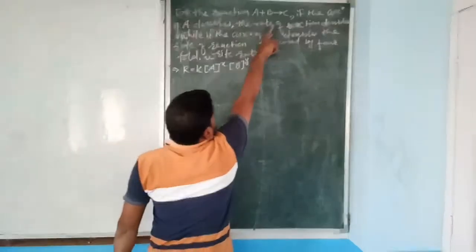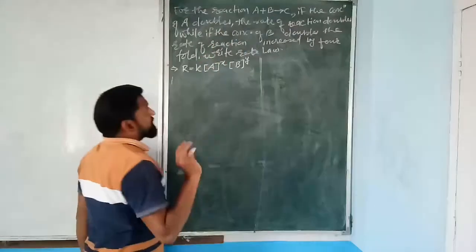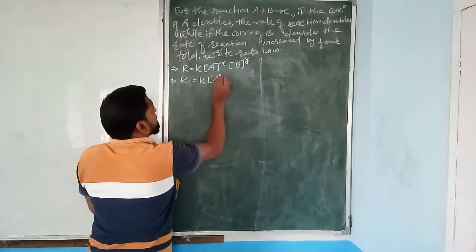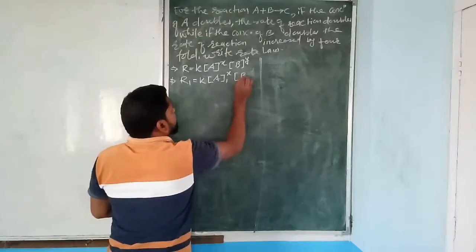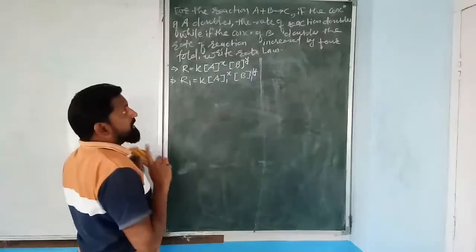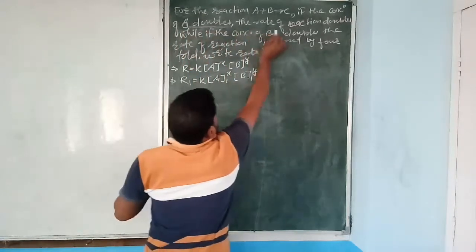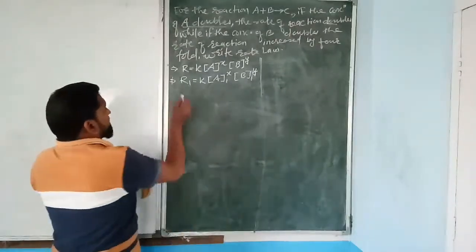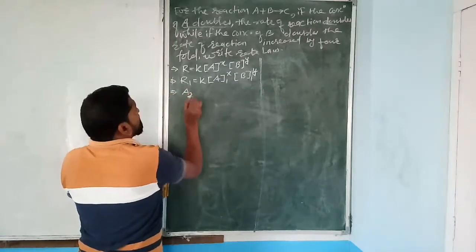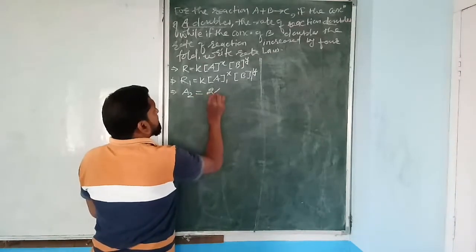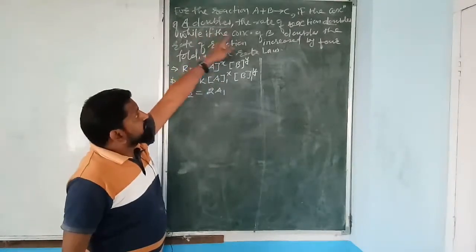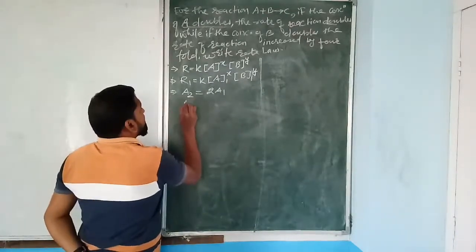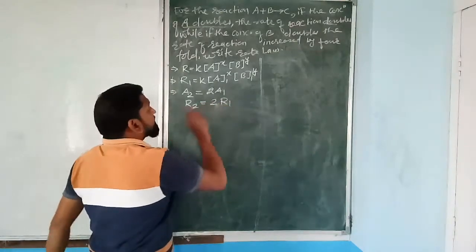Forming the ratio R₂/R₁: R₂/R₁ = k(2A₁)^x [B₁]^y / (k[A₁]^x [B₁]^y). K, [B₁]^y, and [A₁]^x all cancel. We get 2R₁/R₁ = 2^x, so 2 = 2^x, therefore x = 1.